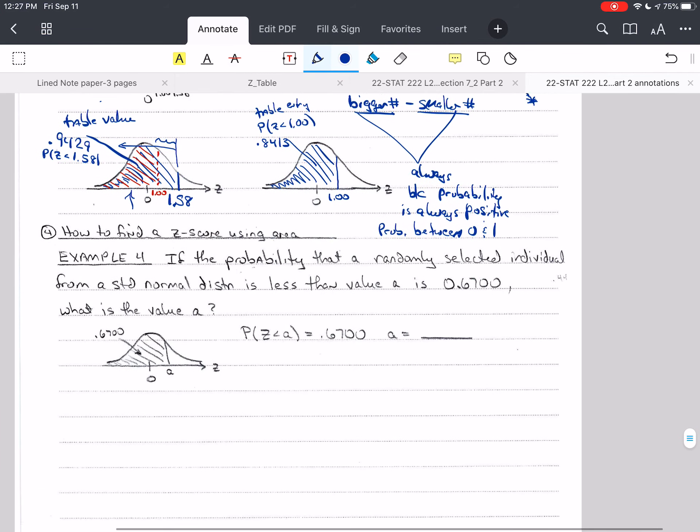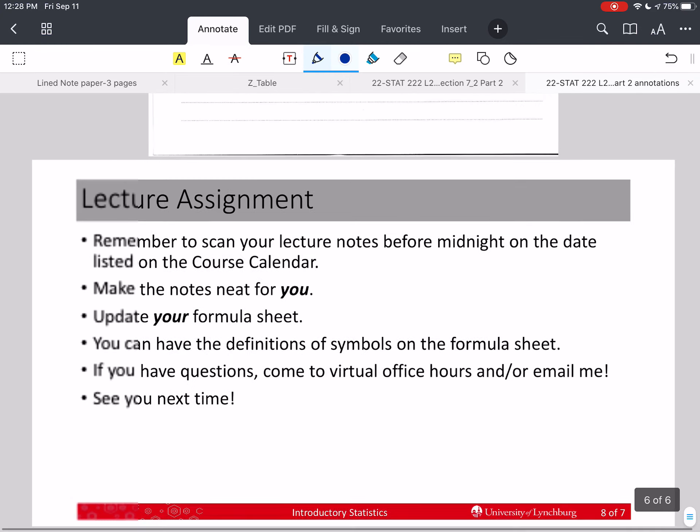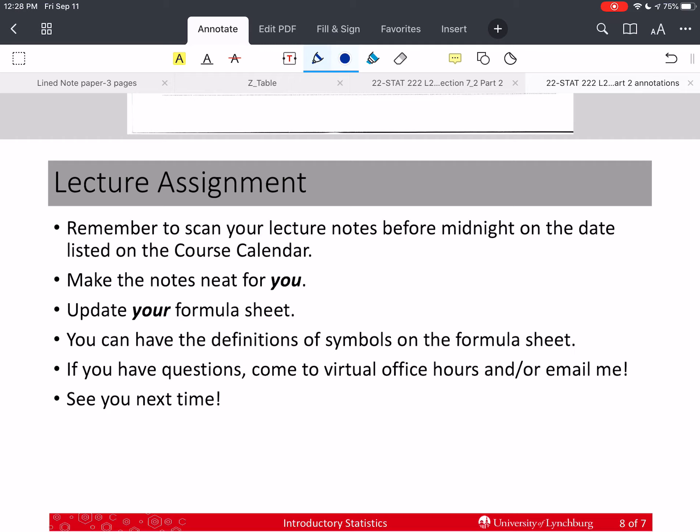So that's the third type of problem that we can answer when we're given a value and asked for a probability. So remember to scan your lecture notes for the day that's listed on the course calendar. Make sure they're neat for you. If you have any questions, come to virtual office hours. If you cannot make it to virtual office hours and you want me to answer a question, then email me. Email me pictures. So you should always have at least two pictures for your email. One, the problem. I know you all think I have these memorized, but I don't. So I do need the problem in case I don't have access. And two, your work so far. Your work so far. That way I can see what you're doing, how you're trying to approach the problem. And guess what? I'll be able to see where you're heading off in the wrong direction or if you're going in the right direction. So I hope you will take care and we will see you next time.